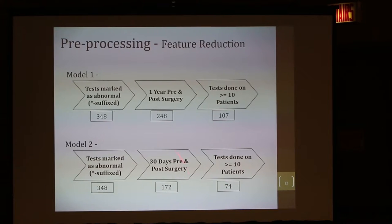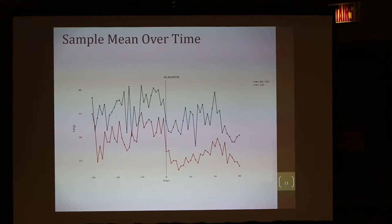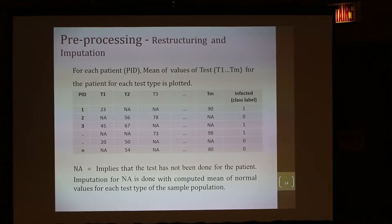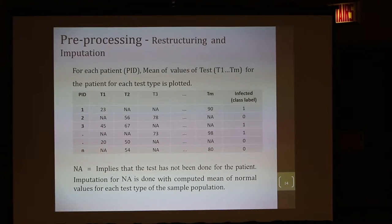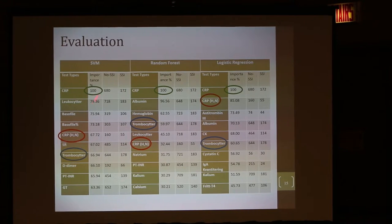For the 30-day group — 30 days pre and 30 days post — we came down to about 74 tests. Interestingly, important tests like HbA1C were present in these 74 features. When we did the sample mean over time, it already gave us a clue that some of these tests are discriminatory enough. We built the matrix and used imputation based on normal values and their means for missing values, then ran tests on three models: random forest, logistic regression, and SVM.